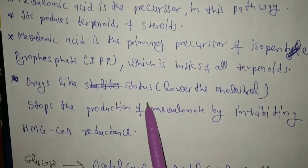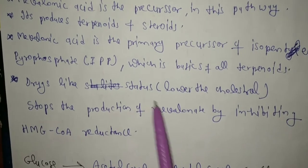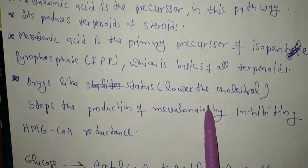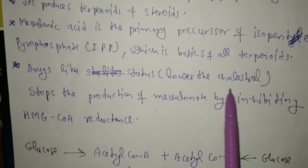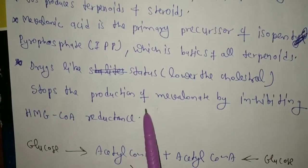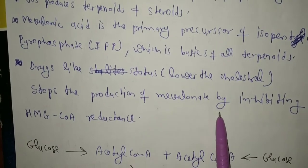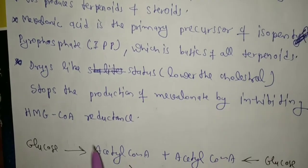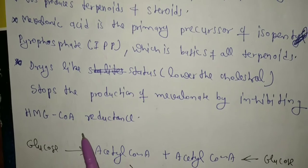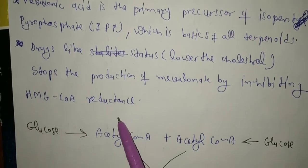Drug-like statins lower the cholesterol by stopping the production of mevalonate through inhibiting HMG coenzyme A reductase.